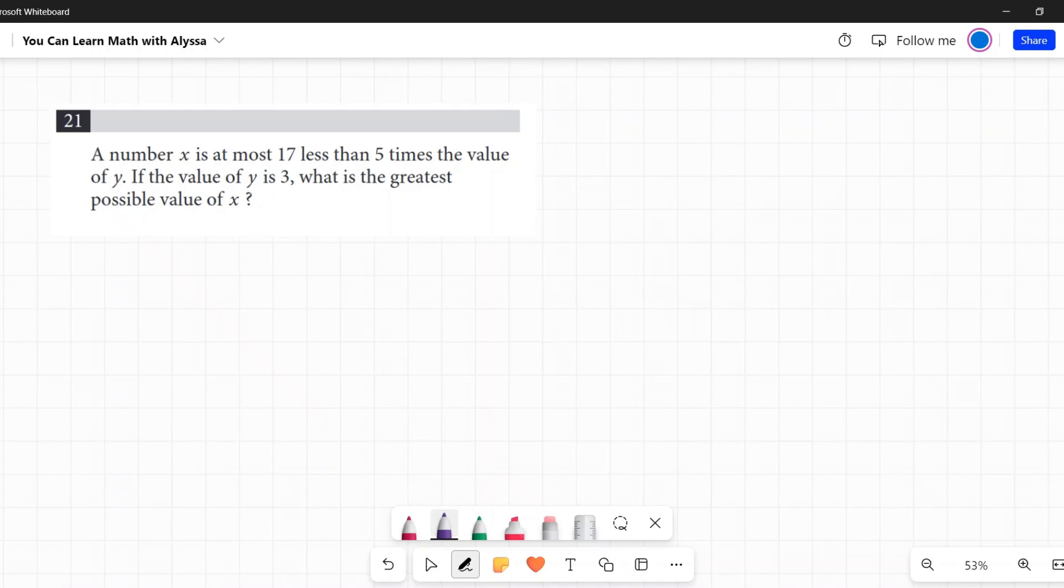Let's put this together into an equation. So it says a number X is, when it says is, that usually means equals, but then it says at most.